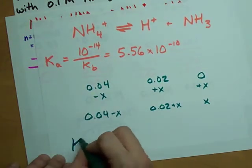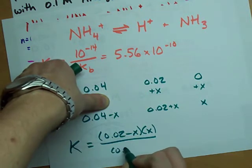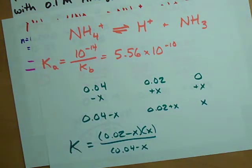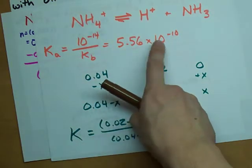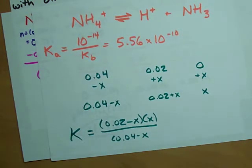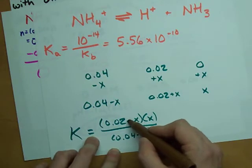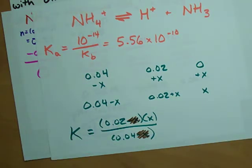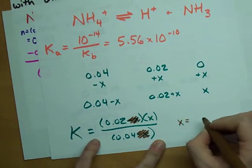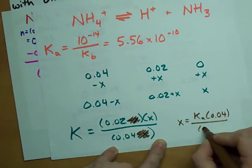So the K turns out to be 0.02 minus x times x all over 0.04 minus x. Now, what do we have here? We've got the fact that K is 5.56 times 10 to the negative 10. That's horrendously small. And that means x will be very small, especially relative to real numbers like 0.02 and 0.04. So we can assume that these x's perturbing the 0.02 and 0.04 are insignificant. And that simplifies our equation. Now it just turns out that x is equal to our Ka times 0.04 divided by 0.02.